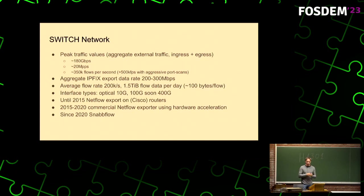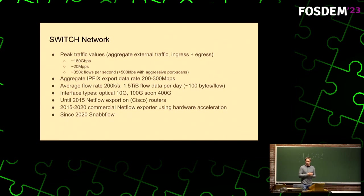So the flow records themselves — this is all for the unsampled flow. The average flow rate is around 200,000 per second. The data it generates, the actual NetFlow data, is roughly 1.5 terabytes per day. So the actual scaling problem is more on the collector's side.